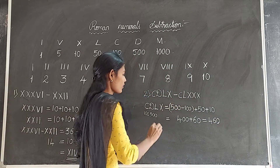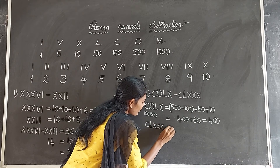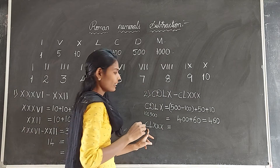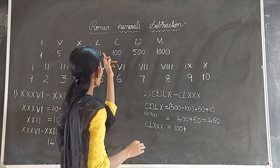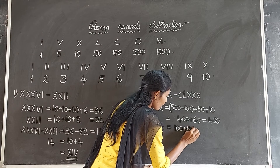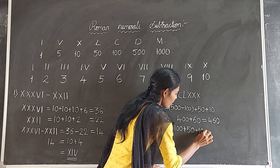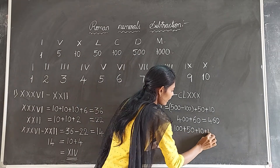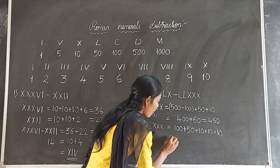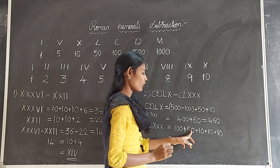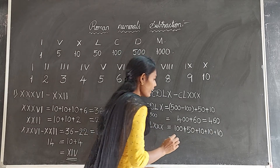Now take CLXXX. What is the value of C? 100. Plus what is the value of L? 50. Plus what is the value of X? 10. Again, what is the value of X? 10. Again X is 10. So 100 plus 50 is 150, plus 30 is equal to 180.